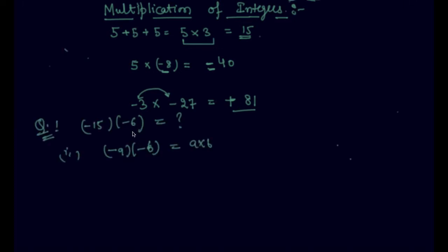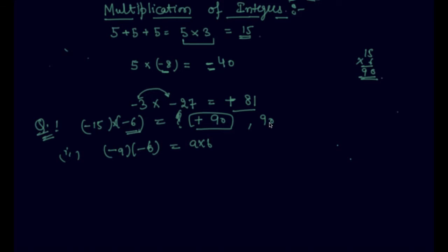Here is a question: negative 15 into negative 6. As I told you, if there are 2 negative signs on the multiplication side, the answer would be positive, and 15 into 6 is 90. So the answer is 90. There is no need to write a positive sign in front, as it ultimately depicts a positive number. The formula is: negative A into negative B equals positive AB.